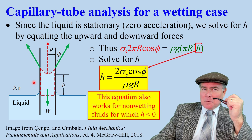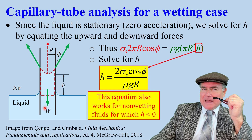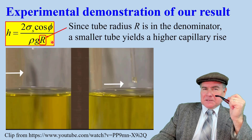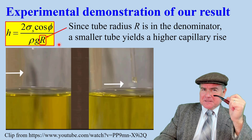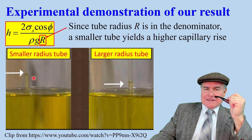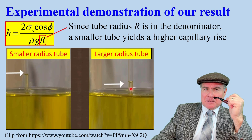H equals 2 sigma_s cosine phi over rho g r. We derived this for a wetting fluid, but it also works for a non-wetting fluid — in that case H would be negative. Let's demonstrate this equation experimentally. Since r is in the denominator, a smaller tube should yield a larger capillary rise for the same liquid. We see that this is true: the rise height is larger in the smaller diameter tube compared to the larger diameter tube.